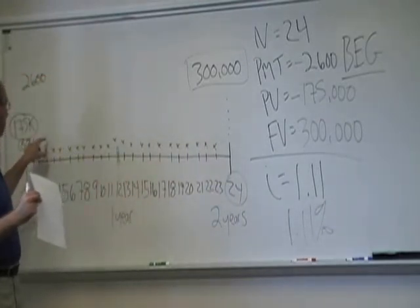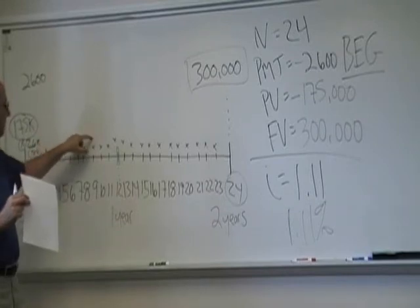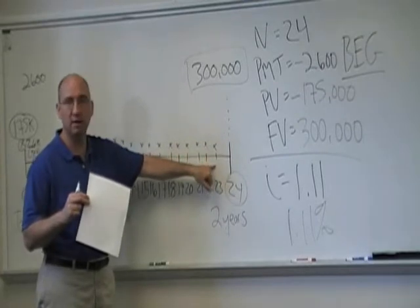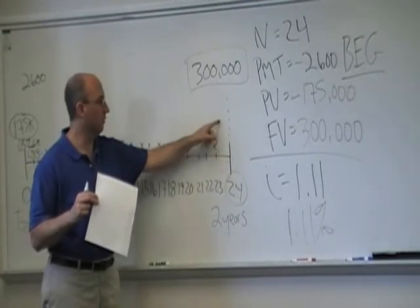This one will grow by 23, 22, 21, 20, 19, 18, 17, 16, 15, 14, 13, 12, 11, 10, 9, 8, 7, 6, 5, 4, 3, 2. Then she'll make her last payment and that will grow for one month.